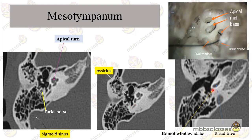In the zoom image you can see the round window niche and the basal turn of the cochlea. To correlate clinically, this round window niche is related to the basal turn, or the scala tympani, of the cochlea. This is a temporal bone dissection showing the round window area and the cochlear turns — basal, middle, and apical — drilled and running in a spiral manner. A wire is running through the round window to the basal turn, showing how we can correlate radiological findings with clinical ones.